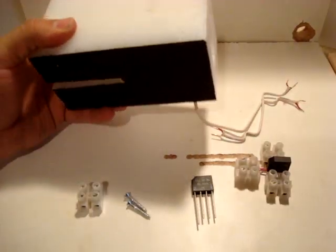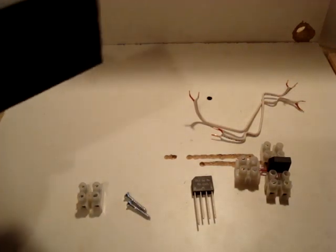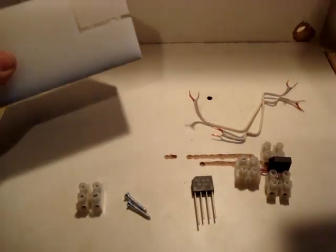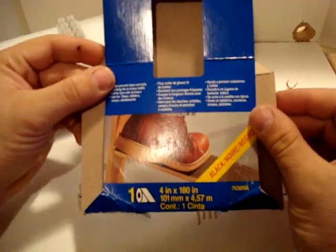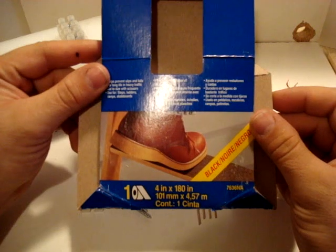You'll notice on the bottom here that it's black now, and what that is is a product called friction tape. You use it for stairs and things, and I'll show you kind of what that looks like here. Kind of flatten out the carton so you can see.